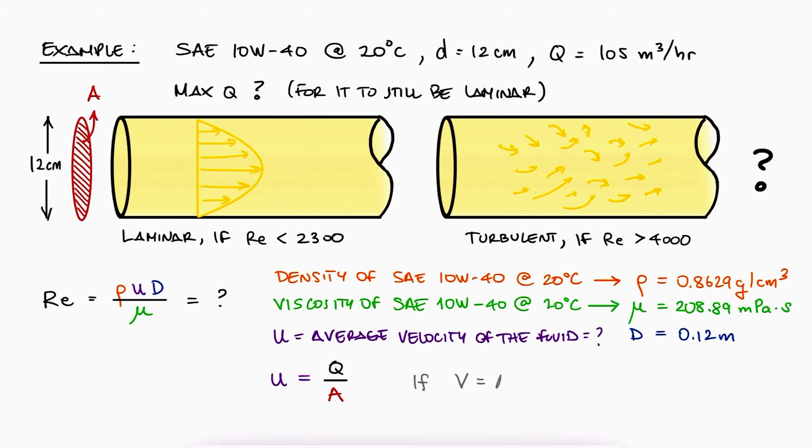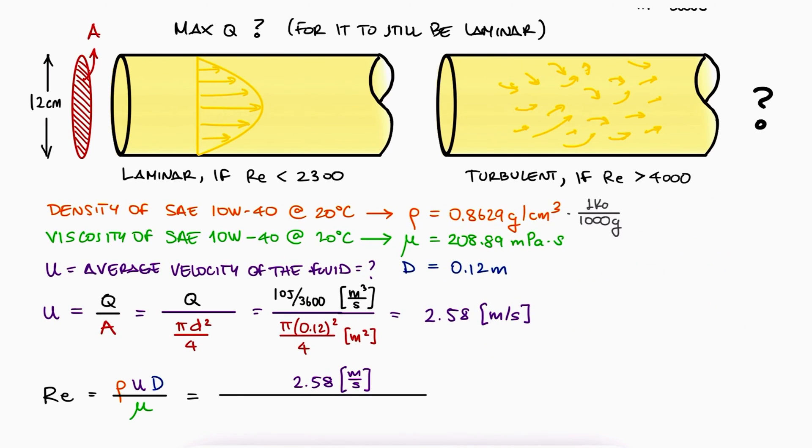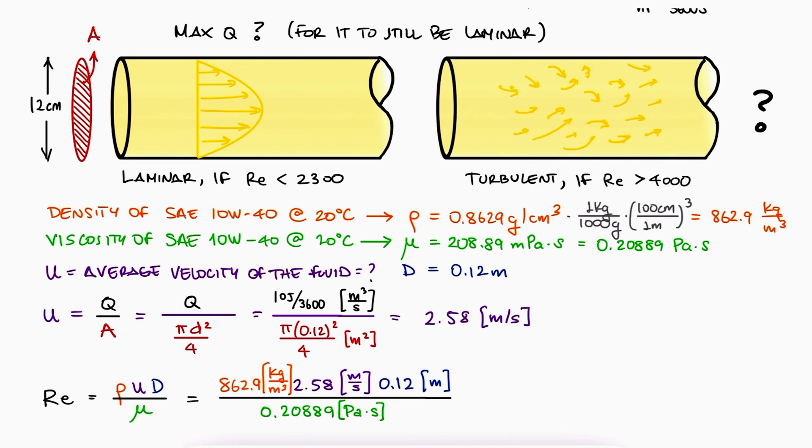Volume flow rate (volume per time) can be written as area times velocity. The area is πd²/4, and we calculate the velocity in m/s from the volume flow rate in m³/s. By substituting the velocity, density in kg/m³, viscosity in Pa·s, and diameter in meters, we find that the Reynolds number equals roughly 1,278, which means the flow is in the laminar regime.